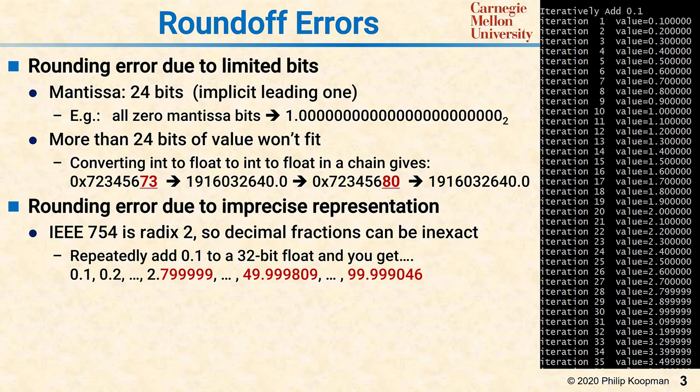On the right is a computer program where all I did was add 0.1 repeatedly and print it out. Note that the printouts usually don't include quite all the bits, and there's some funny stuff going on with rounding to usually give you the right result. So you get 0.1, 0.2, 0.3. But then around 2.6, you get 2.6, 2.7, and you get 2.799999.